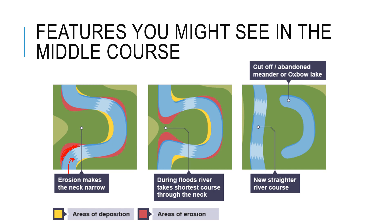We're talking about attrition and abrasion, and the chemicals in solution eating away at the banks. So erosion is happening on all the outsides of the bends — just like going around a roundabout forces you to the outside.